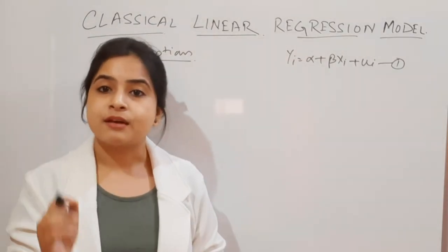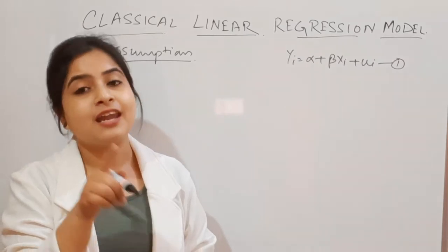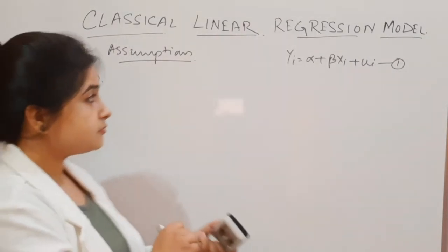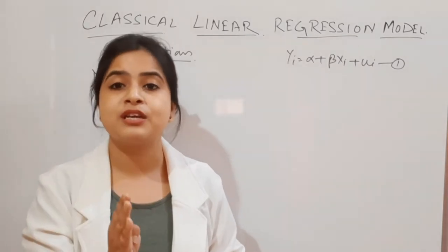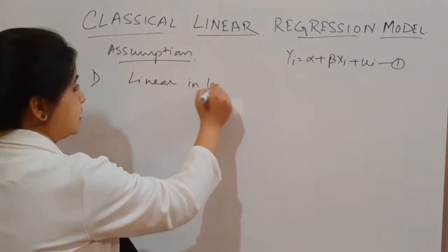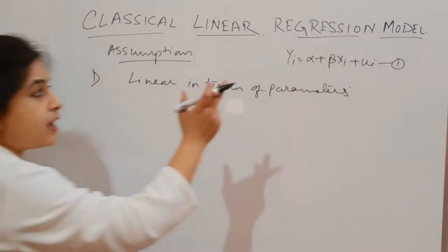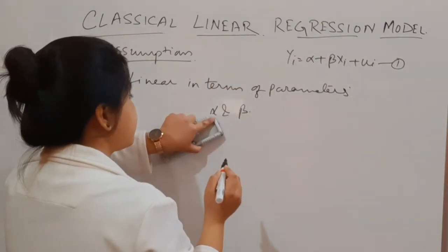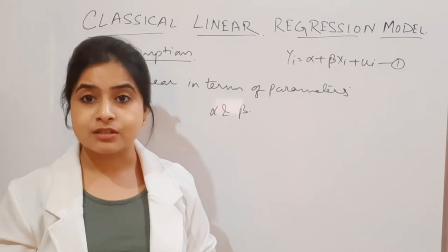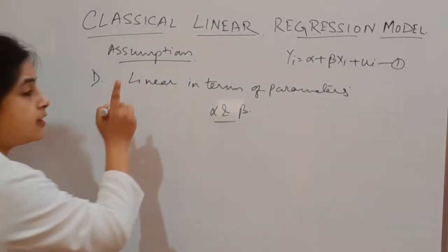We are talking about the assumptions of CLRM — classical linear regression model — where L represents linear. The first assumption is regarding the linearity of the model. The model has to be linear in terms of the parameters. The parameters we have are alpha and beta, and it is important that alpha and beta are linear — no log, no exponential, no powers like square, cube, or quadratic. It has to be linear for the first assumption to be satisfied.